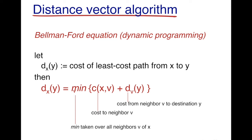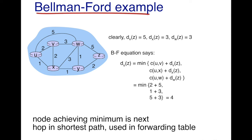Let's see how the Bellman-Ford works through an example. Assume we want to find the least cost path from u to z. There are three neighbors of u: x, v, and w. Assume we know the least cost path from these neighbors to z. To reach z from v the least cost path is 5, going through v, x, y, and z. To reach z from x the least cost path is 3, and to reach z from w the least cost path is 3 as well.